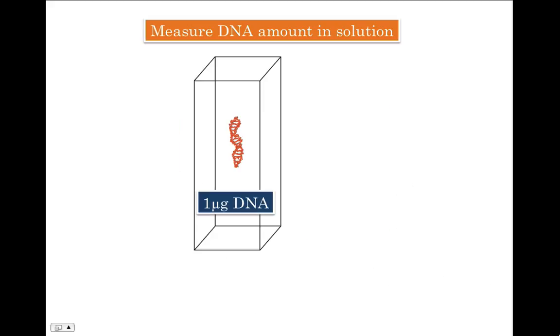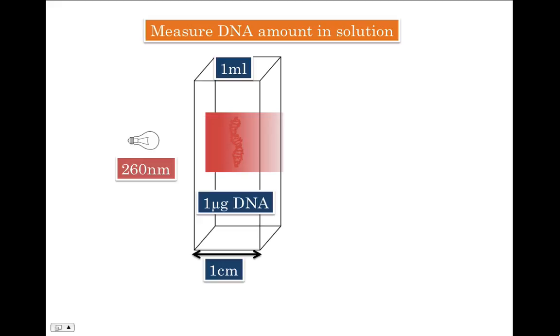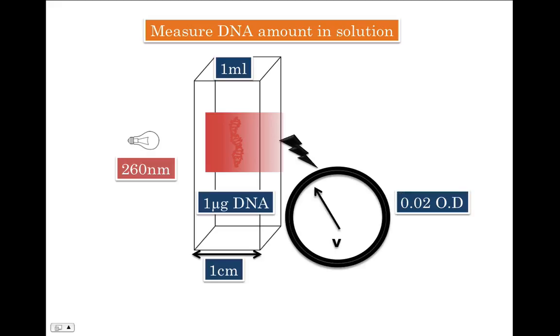Let's imagine that you have 1 microgram of DNA that you have dissolved in 1 ml of water. Now, you pour this 1 ml into a standard cuvette whose path length is 1 centimeter. Now, switch on the 260 nanometer light. Some of it would be absorbed by DNA while some of it will pass through and fall on photodetector. And subsequently, you get a reading which is 0.02. So, 1 microgram of DNA gives 0.02 optical density or OD.